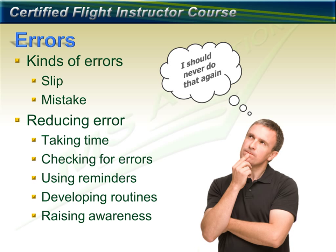Students will make errors during training. There are two types of errors: slips and mistakes. A slip occurs when a person plans to do one thing but inadvertently does something else — these are errors of action. Forgetting to do something is a slip. Time pressures are a common source of slips; the more hurried a person's work becomes, the more likely a slip is.